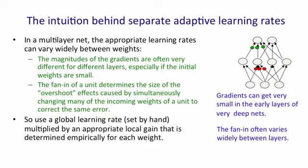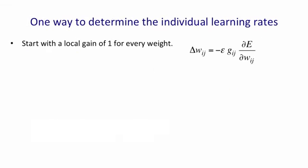The idea is that we're going to use a global learning rate, which we set by hand, and then we're going to multiply it by a local gain that's determined empirically for each weight. A simple way to determine what those local gains should be is to start with a local gain of 1 for every weight, so that initially we're going to change the weight Wij by the learning rate times the gain of 1, Gij, times the error derivative for that weight.